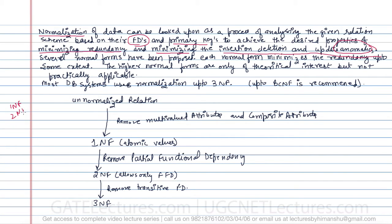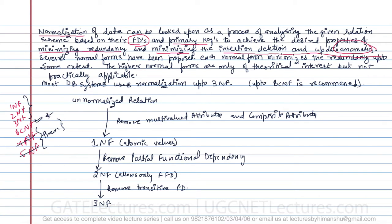The normal forms include 1NF, 2NF, 3NF, BCNF, 4NF, and 5NF. In practice we only implement up to 3NF — 4NF and 5NF are not practically implementable; they are mostly theoretical. BCNF is recommended, meaning every relation should be in BCNF, but practically we implement only up to 3NF.